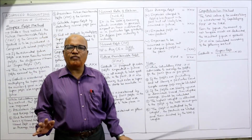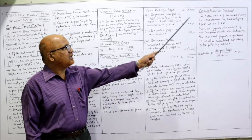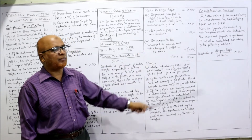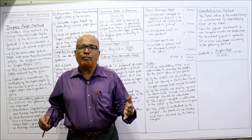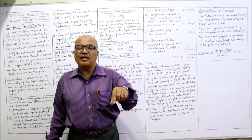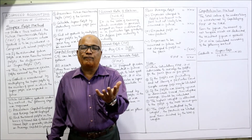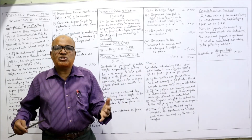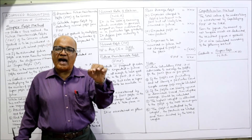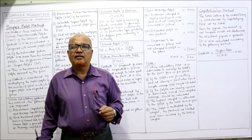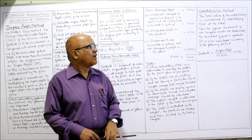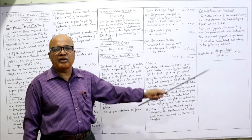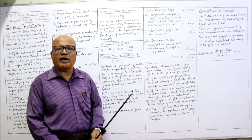Now the last method — capitalization method. The total value of the undertaking is ascertained by capitalizing future maintainable profit at the normal rate of return. This capitalized value is then compared with the net tangible assets. For example, if the capitalized value of future maintainable profit is 10 lakh and actual net assets are 8 lakh, the difference of 2 lakh is the goodwill. The simple formula is: Goodwill = Super Profit ÷ NRR × 100.